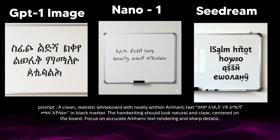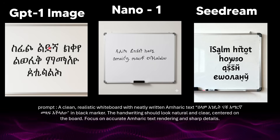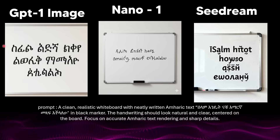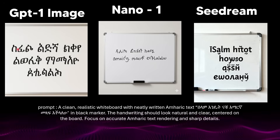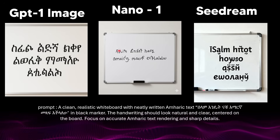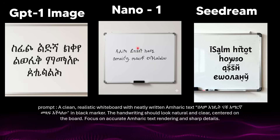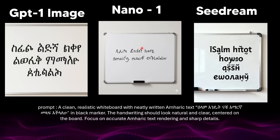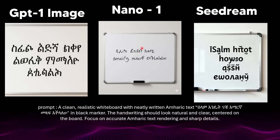The prompt also described spatial and aesthetic constraints — centered, neatly written on a whiteboard — and the model not only drew legible text but aligned it compositionally with photorealistic context: the marker, the board, the reflections. GPT Image 1 tries but fails from the second and third characters onward. Nano Banana 1 and SeaDream completely fail. Midjourney doesn't even really render text. The only image models that genuinely care about text are Google and GPT Image 1.